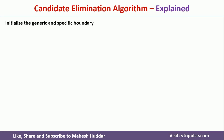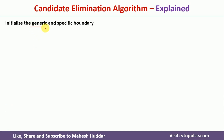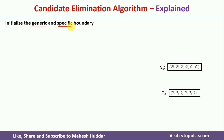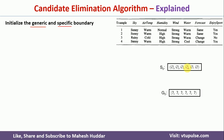In the Candidate Elimination algorithm, first we initialize the generic and specific boundaries. The generic boundary G0 is set to all question marks, and the specific boundary S0 is set to all nulls. The number of question marks and nulls determines the number of attributes. In this case, there are 6 attributes, so we have 6 nulls and 6 question marks.